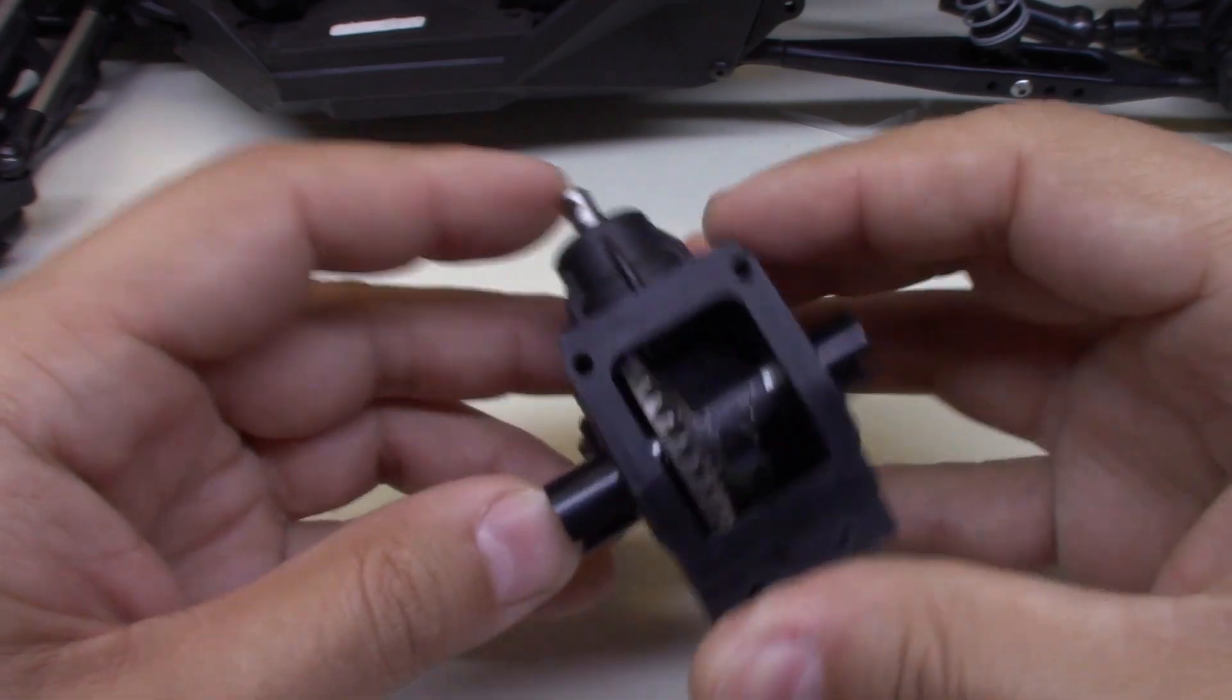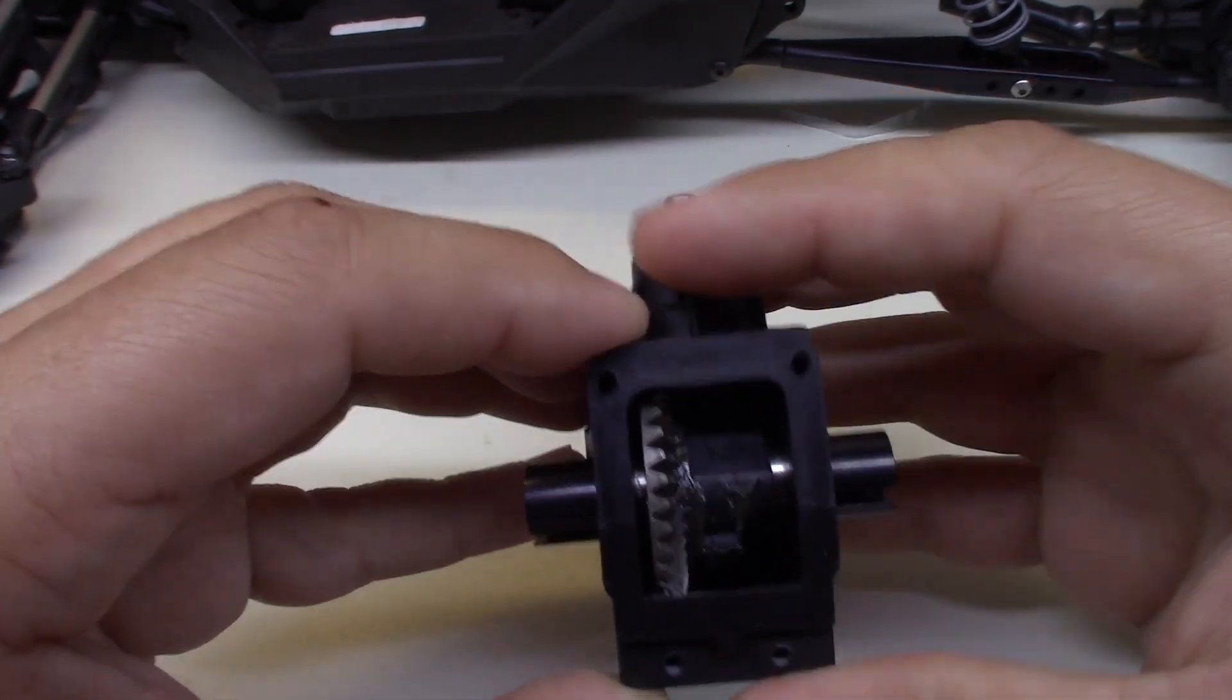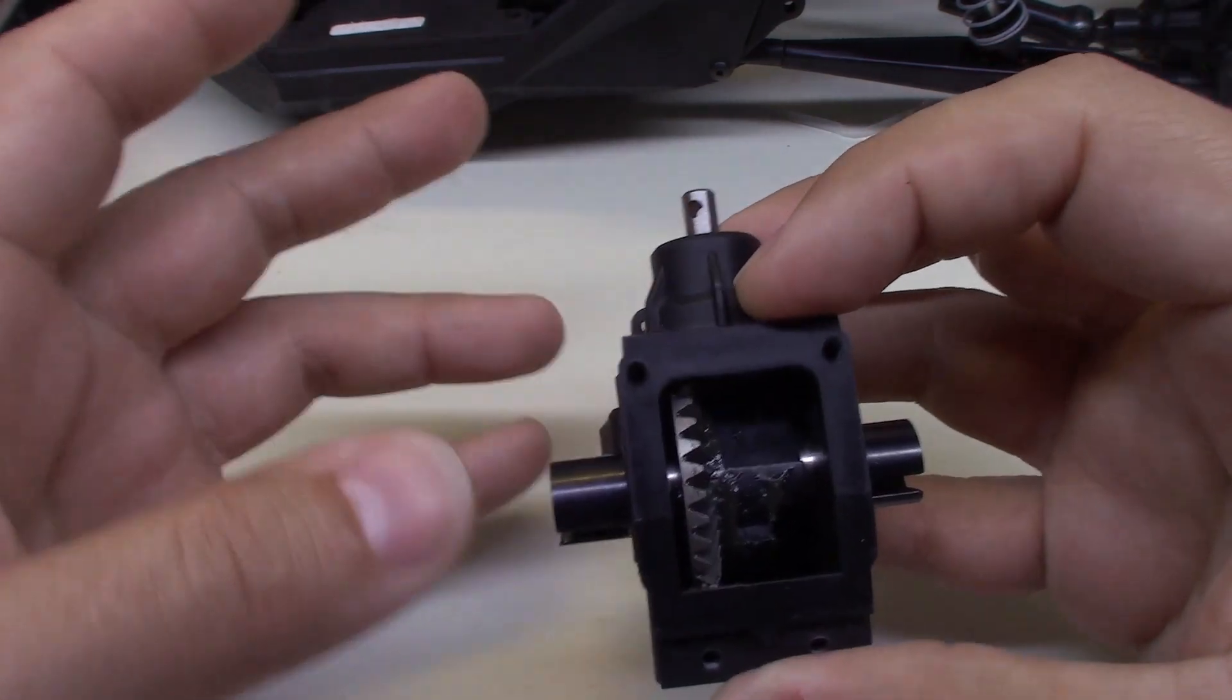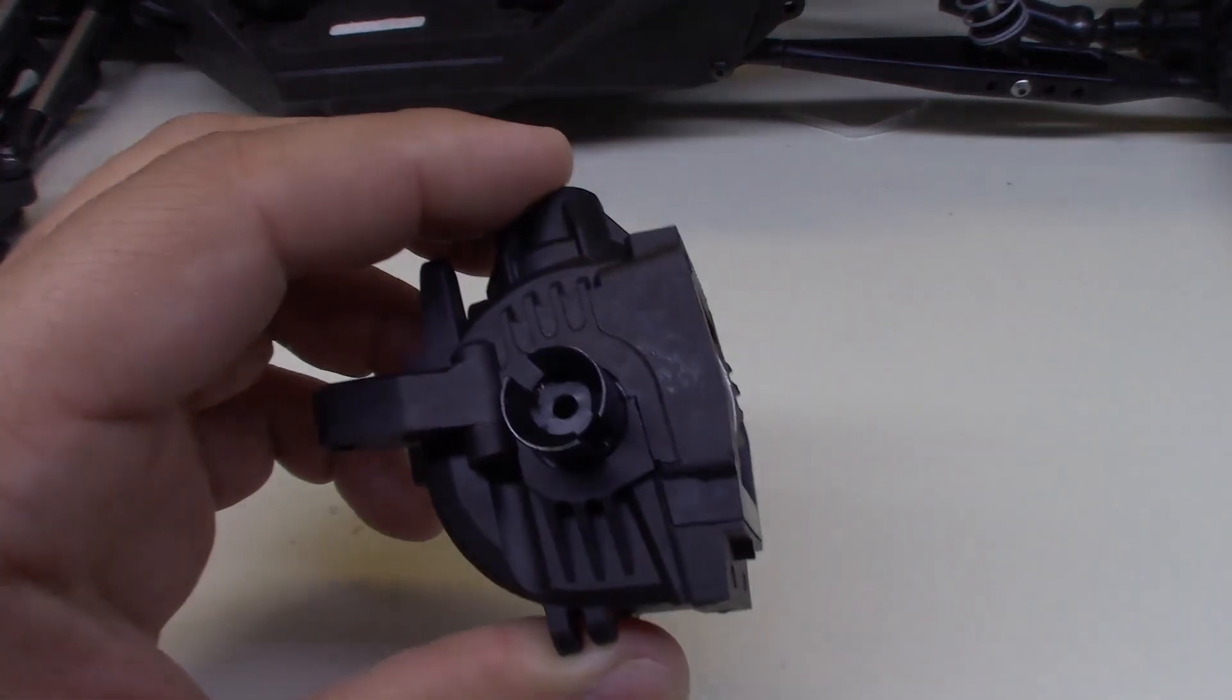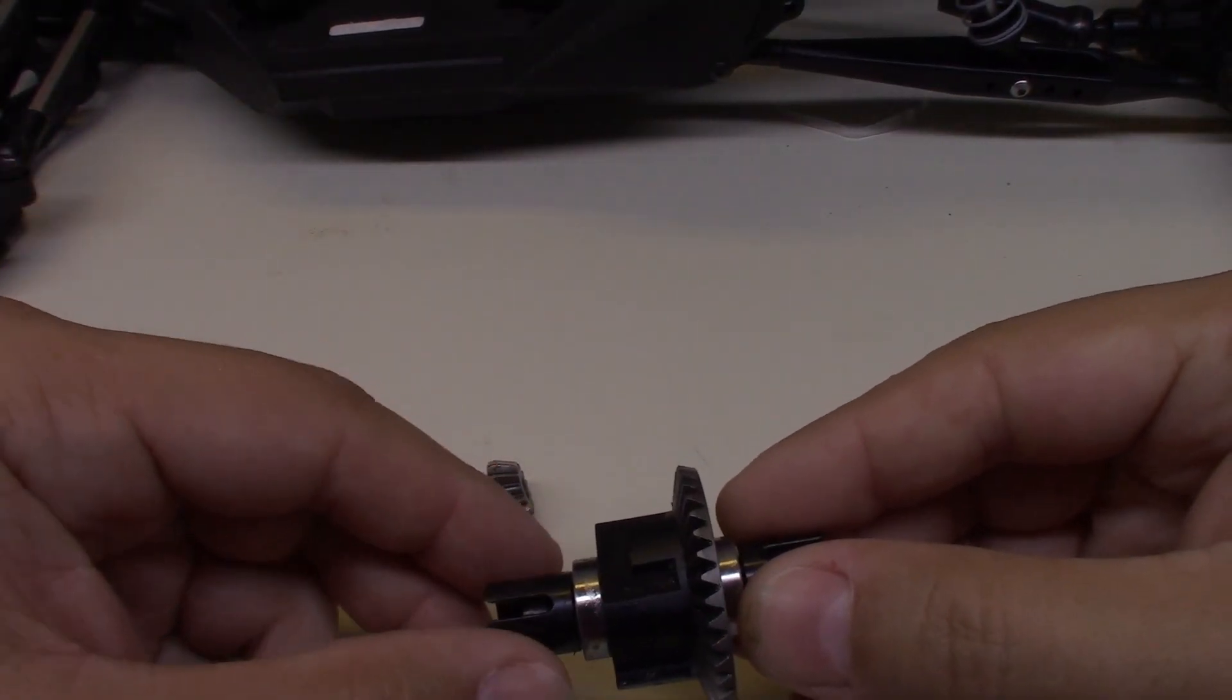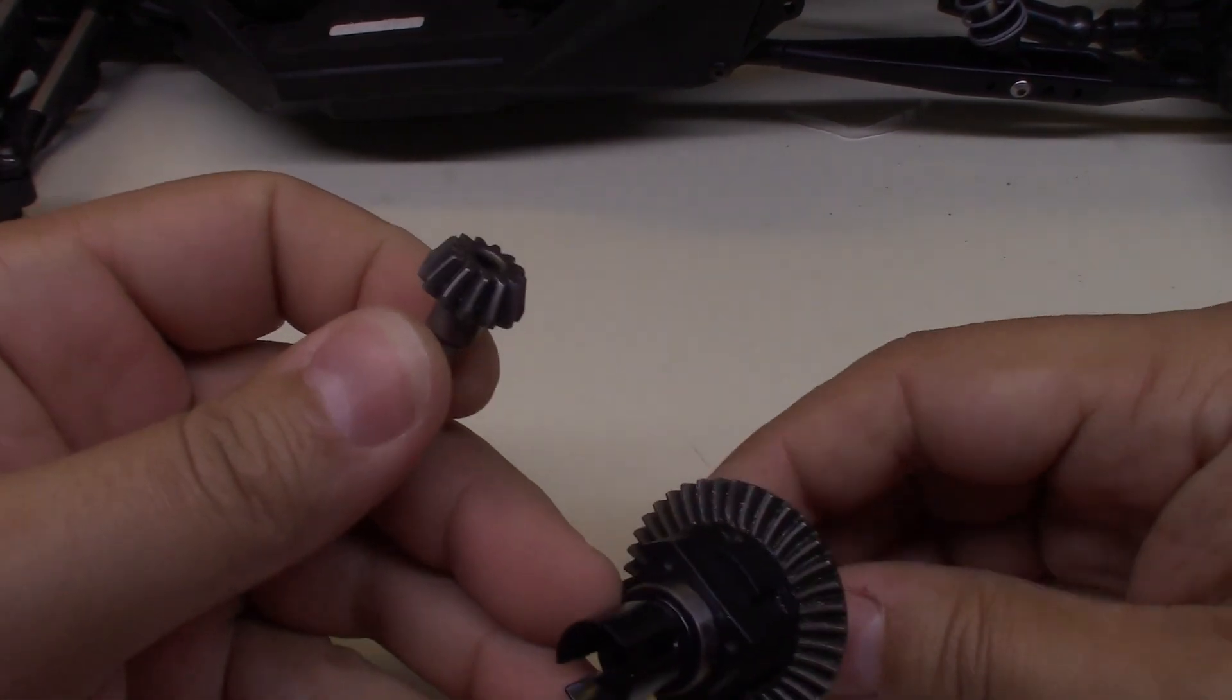So I'm going to pull this apart, and we'll talk about the different adjustments you can make, the differences they make, and what's important when it comes to RC ring and pinion setups. Here are the ring and pinion outside of the housing. This is the ring gear. This is the pinion gear. These are spiral bevel.